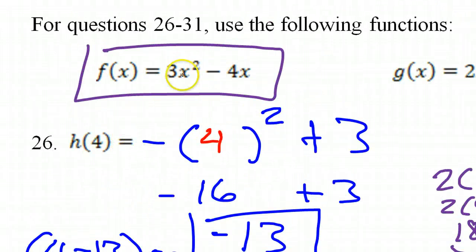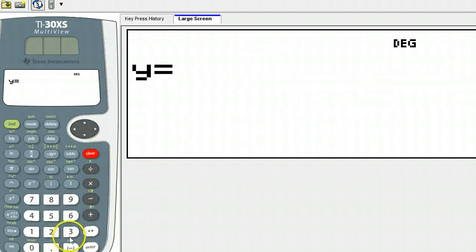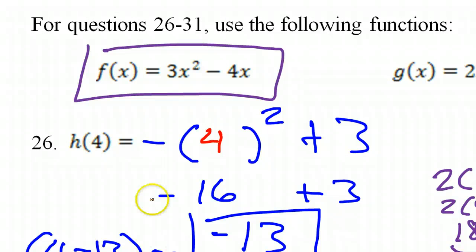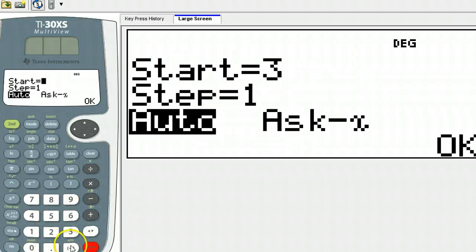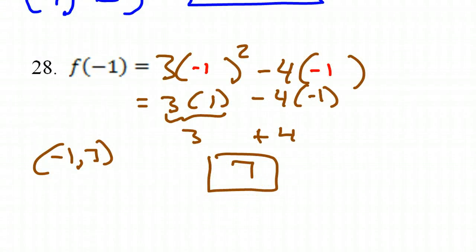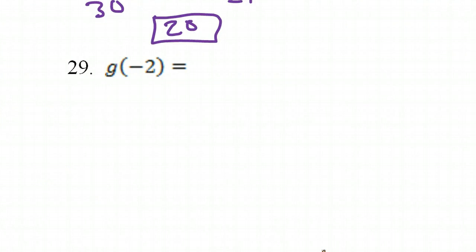In a calculator: 3x squared minus 4x. We want to evaluate this one at negative 1, so we can just tell it to start at negative 1. Hit enter 4 times. And at negative 1, we have 7. We had 7, so we did it right both times. Let's take a look at number 29.